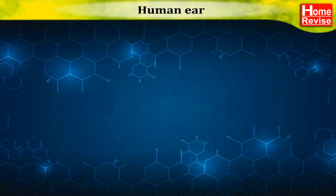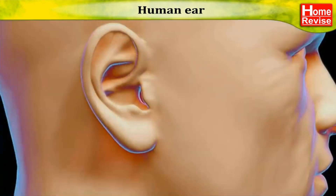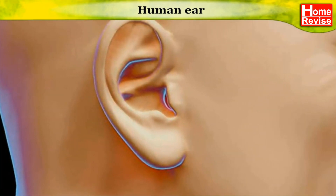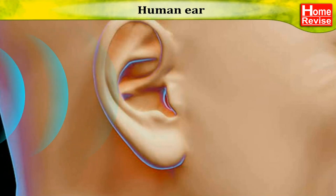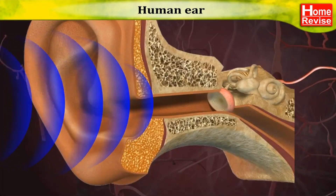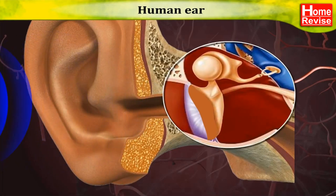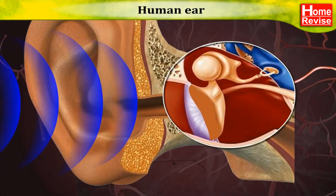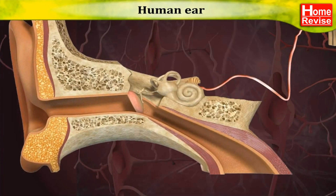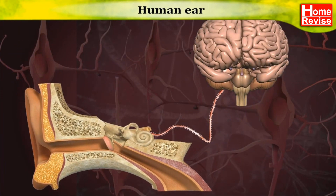The ear is an important organ of the human body. We hear sounds because of our ear. When sound waves fall on the eardrum, it vibrates. These vibrations are converted into electrical signals which travel to the brain through nerves.